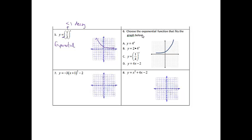This one says to actually choose the exponential function that fits the graph. I notice that this one is touching up at 2, so it has to be 2 times, and it's 4 to the x because it is increasing exponentially and this number is bigger than 1. So it's going to be choice B. The reason it's not choice C is because 1 fourth is smaller than 1, so the graph would actually be going the other way. And it's not choice D because that would give the equation of a line.